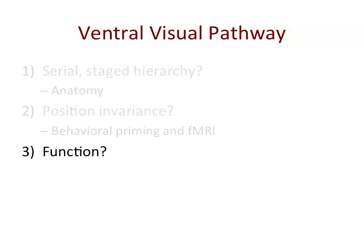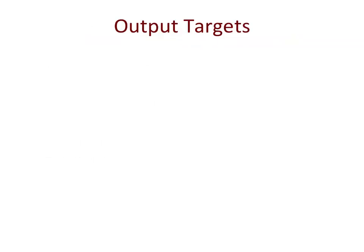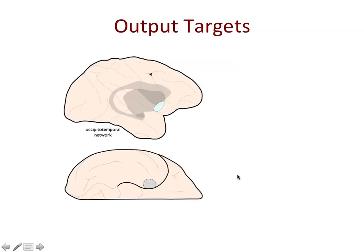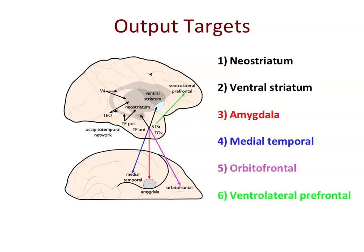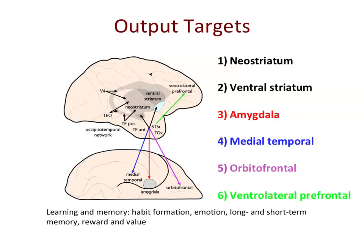Finally, let's address the function of the ventral visual pathway by looking at its outputs. There are a number of output targets shown on a schematized lateral and ventral view of the monkey brain, including subcortical targets such as areas of the striatum — both the neostriatum and the ventral striatum — as well as the amygdala. There are projections to the medial temporal cortex and hence into hippocampus, projections to orbitofrontal cortex, and projections to the ventral lateral prefrontal cortex. Importantly, all of these output targets are involved in learning and memory — things like habit formation, emotion, long and short-term memory, reward, and value. Since these outputs probably provide the raison d'être for the ventral visual pathway, we should think of the ventral visual pathway as serving to capture the stable properties of the world — not just object recognition, but any properties that are stable in the world that may be useful to associate with reward and value.